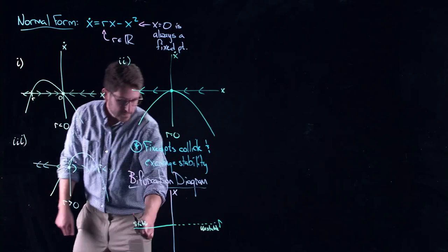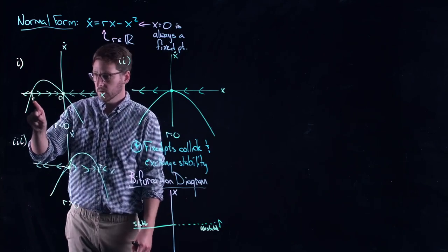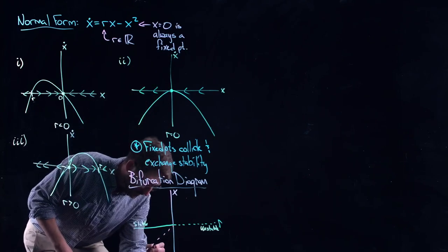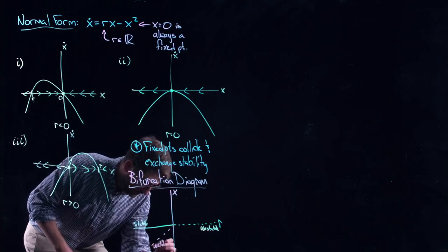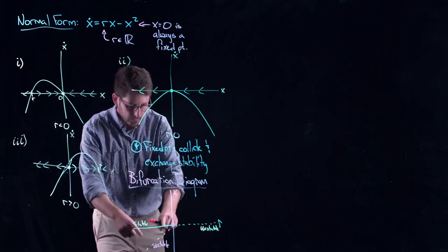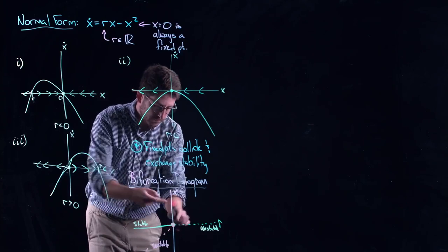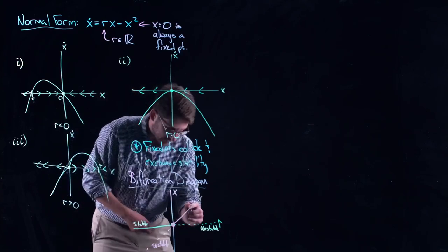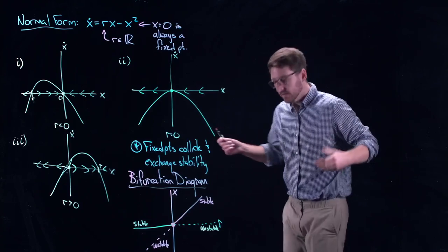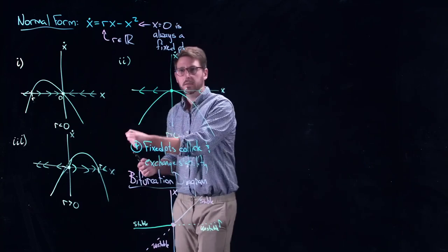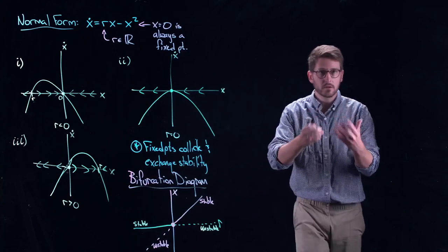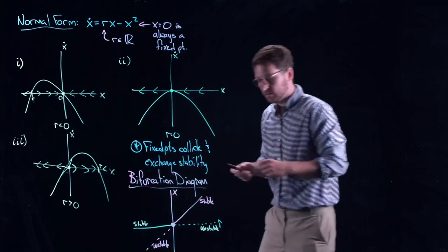When r is negative there is a second fixed point at x = r, and it is unstable. At the bifurcation point — the origin where x and r both equal zero — this unstable fixed point collides with the stable fixed point and takes its stability, becoming stable. It's quite literally a handoff: two fixed points walk by each other, and one takes the stability from the other. If you need to brush up on bifurcation diagrams, try to reproduce that yourself.